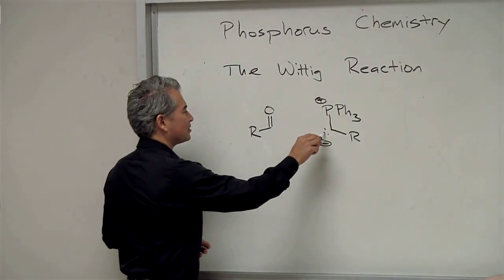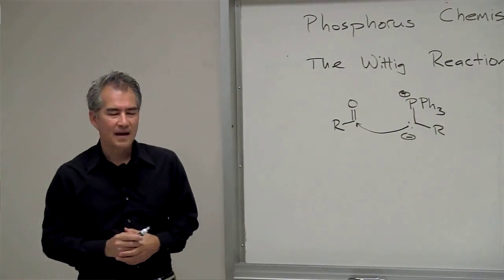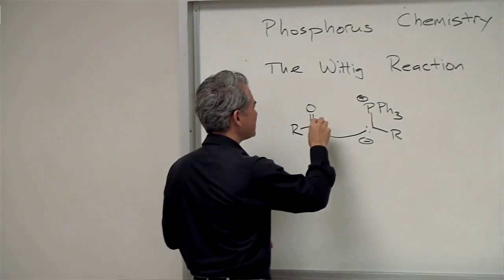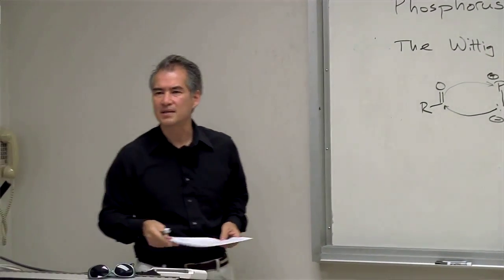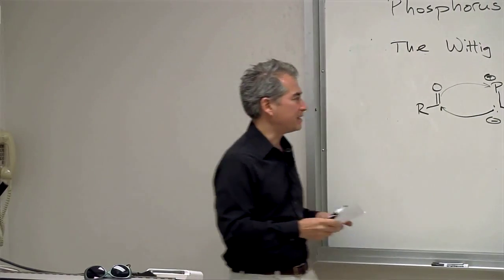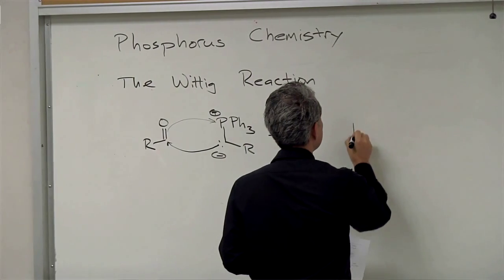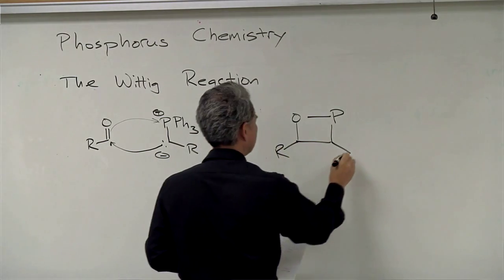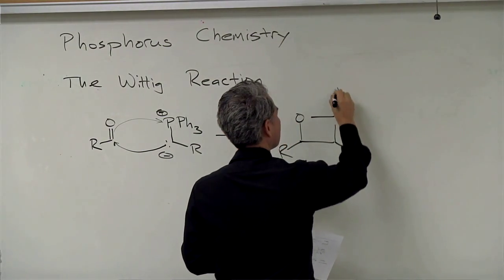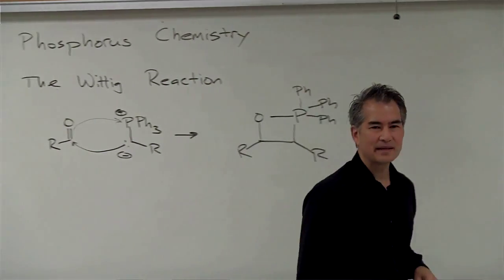This goes through a mechanism in which the carbanion attacks the carbonyl carbon, and at the same time the oxygen bends back around to form a bond to phosphorus. That's the key bond-forming step — the C-C bond forming step of the Wittig reaction. You'll end up with a four-membered ring intermediate. Don't worry that there are five things attached to phosphorus — that's no big deal, phosphorus can have five bonds.